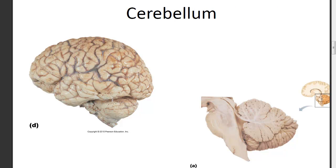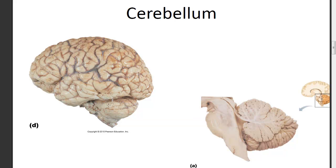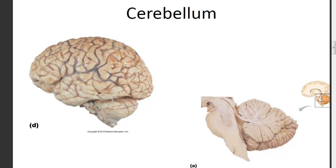The cerebellum is a small, almost mini brain — that's where it gets its name — and it comes off of the brain stem. It's an almost cauliflower-looking structure that comes off the back of the brain stem, underneath the cerebral cortex. We'll talk about the functions of these different parts of the brain when we get to our lecture discussion.